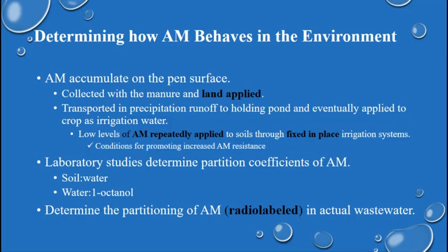We know that antimicrobials accumulate on the pen surface and can be collected with manure when pens are cleaned and then land applied. They can also be transported through precipitation runoff to a holding pond where they may eventually be applied as irrigation water. The question was whether repeatedly applying these low levels of antimicrobials onto soils through a fixed irrigation system could produce conditions that increase antimicrobial resistance.